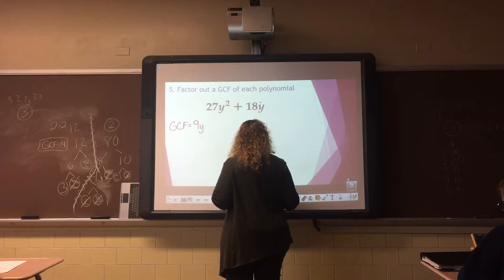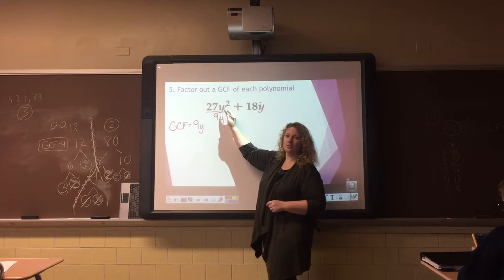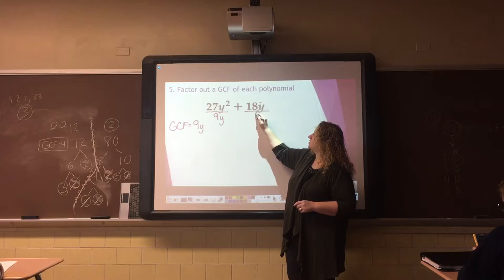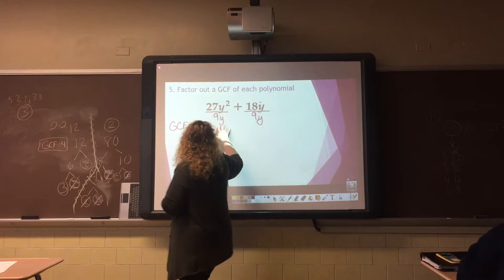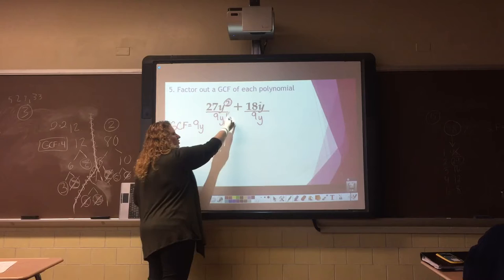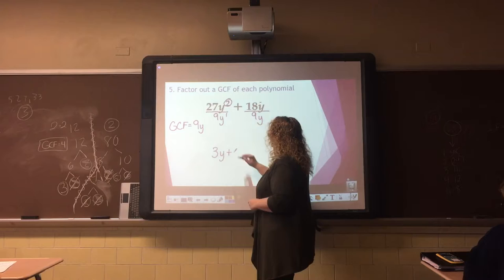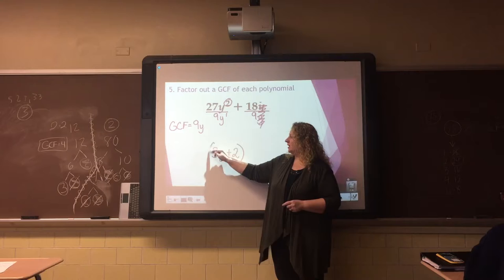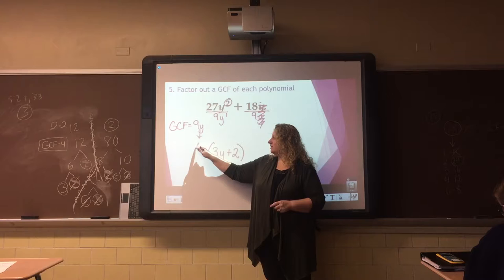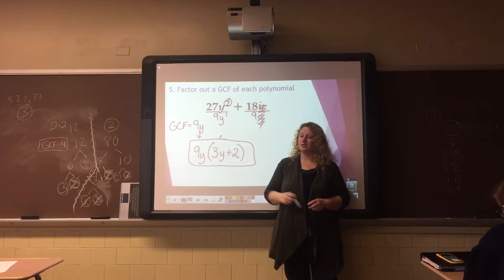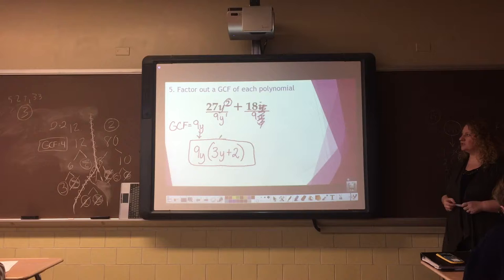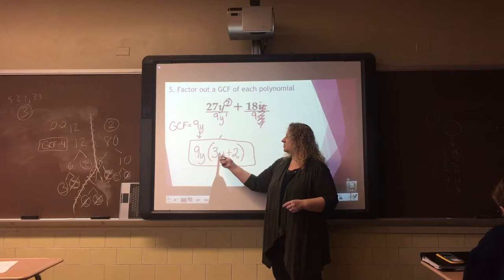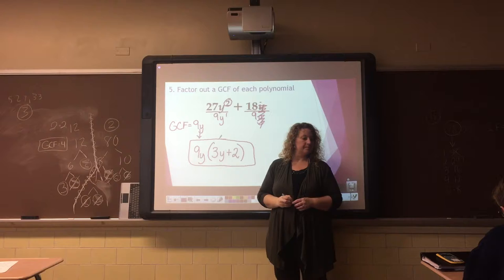Now show the division step. Draw a fraction bar underneath the first term and write the GCF of 9y underneath it, then draw a fraction bar with 9y under the second term. 27 divided by 9 is 3. Subtract the exponents: 2 minus 1 gives us y to the first power. Bring down the plus sign. 18 divided by 9 is 2, and the y's cancel out. Wrap in parentheses and bring the GCF in front. The final answer is 9y(3y + 2).